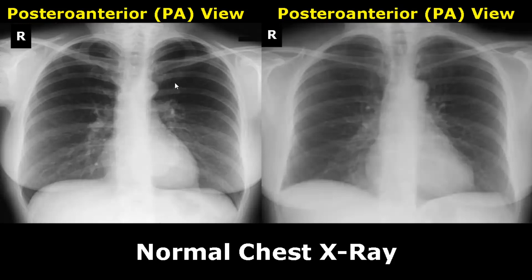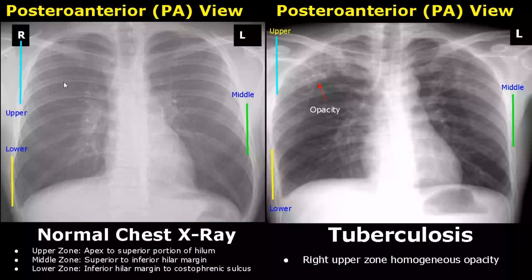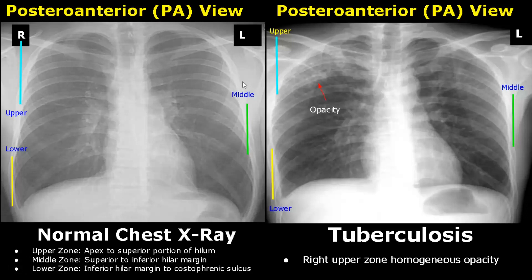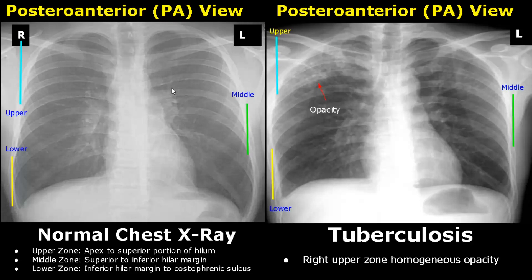Here we have normal PA views showing clear lung fields. In radiography, we can divide the lung into three zones — three zones in the left lung and three zones in the right lung. Keep in mind that these lung zones do not correspond to lung lobes; they are just used in radiography to aid in diagnosis. The upper zone starts from the apex to the superior margin of the hilum, the middle zone is from the superior to the inferior margin of the hilum, and the lower zone is from the inferior margin of the hilum to the costophrenic sulcus.